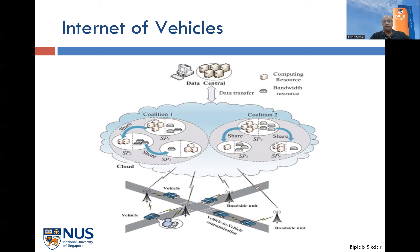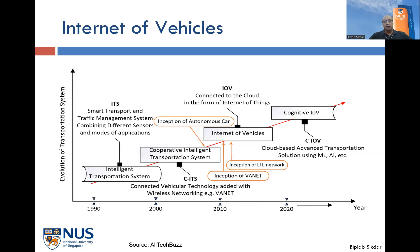Vehicles also have network connectivity. They may communicate with each other, with pedestrians, or with roadside units. Together they share data; that data may be stored in the cloud and then analyzed and processed. This is the Internet of Vehicles. This chart shows the evolution of connected vehicles over the years.